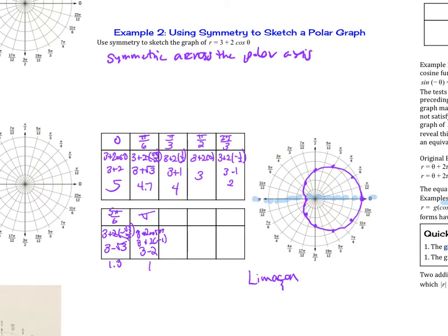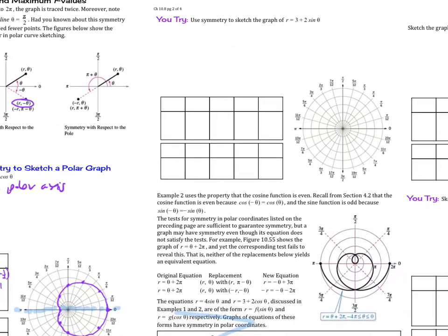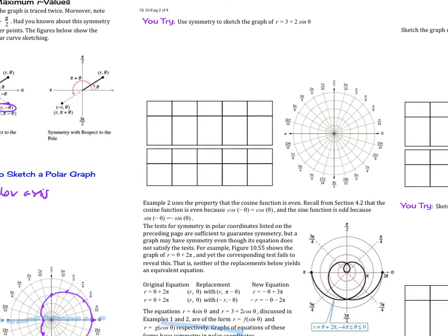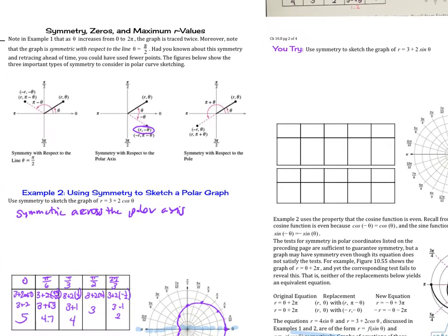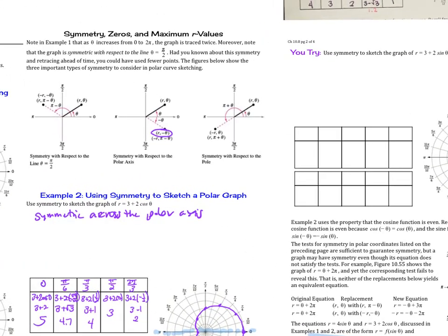And then later in this section of 10.8, we'll take a look at a lot of special curves in here. So like the limaçon, the lemniscates, and then some rose petals. Now for now though, I want you to go ahead and try this next example. Sketch the graph of r equals 3 plus 2 sine of theta. You could try the symmetry test here if you would like.